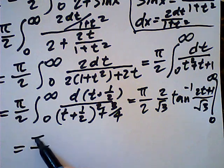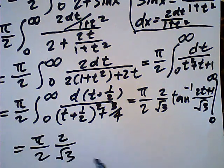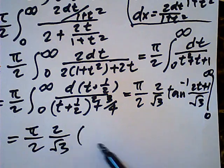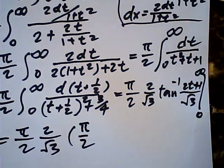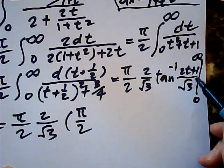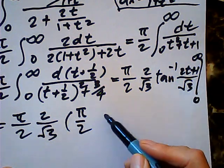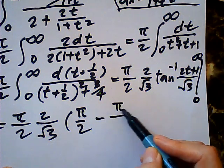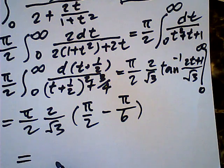So that will be half pi, two over root three, and infinity, half pi, zero. Put it there. It's two over root three. It's pi over six. Right? So it's end up with pi square over three root three.